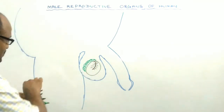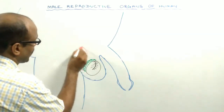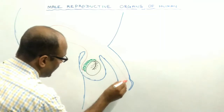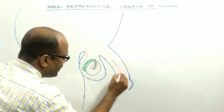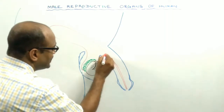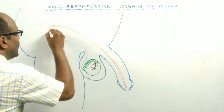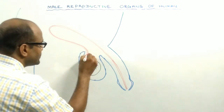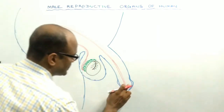The secondary reproductive organs help for the process of reproduction. That's why these secondary reproductive organs are also known as accessory reproductive organs.